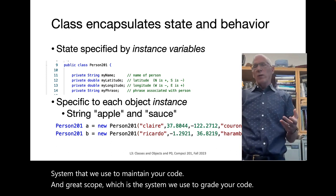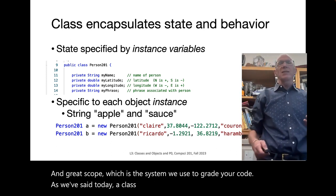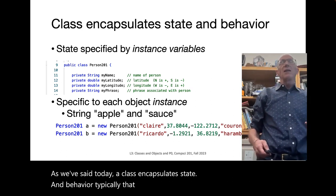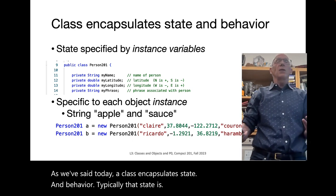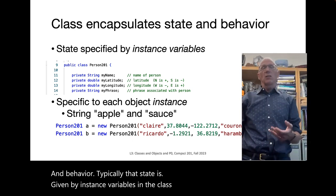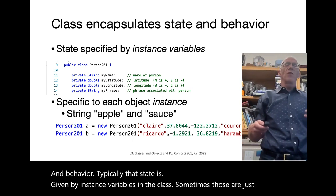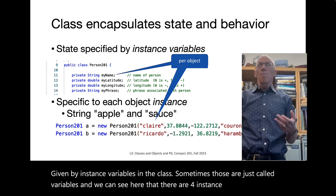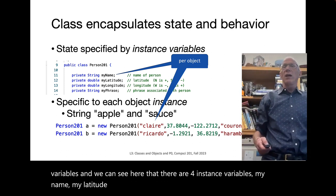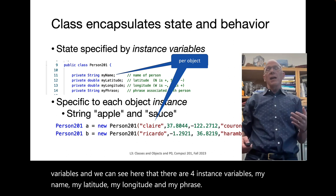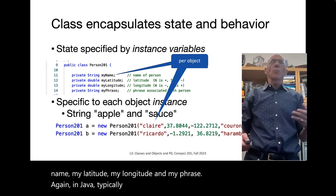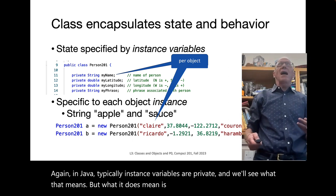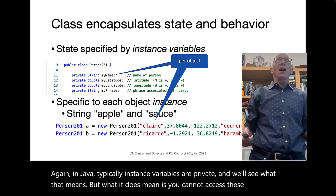A class encapsulates state and behavior. Typically, that state is given by instance variables in the class. We can see here that there are four instance variables: myName, myLatitude, myLongitude, and myPhrase. In Java, instance variables are typically private, meaning you cannot access these from outside the class.